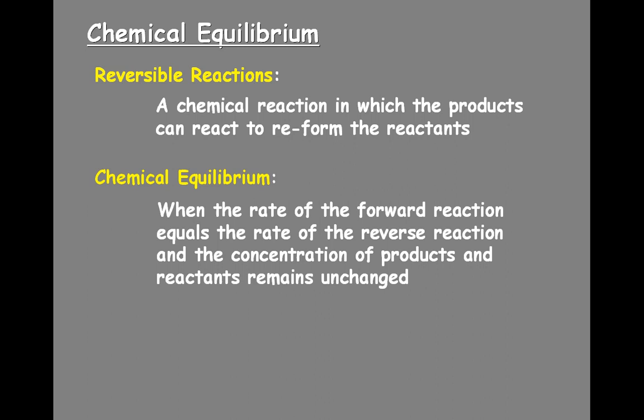In a chemical equilibrium, the rate of the forward reaction — that is how fast it happens — is equal to the rate of the reverse reaction. At that point, you get no change in the concentration of any of the reactants or any of the products. One note here: the amount of reactants and the amount of products are not necessarily equal to each other. Chemical equilibrium is when the rate of the forward reaction is equal to the rate of the reverse reaction.